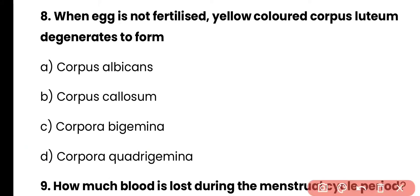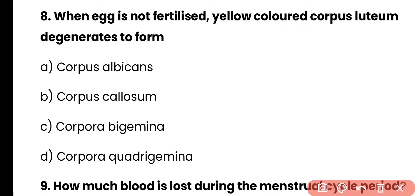Question 8: When the egg is not fertilized, the yellow-colored corpus luteum degenerates to form — corpus albicans, corpus callosum, corpora bigamina, or corpora quadrigemina? Correct answer is option A. When there is no fertilization, the corpus luteum is further broken down into corpus albicans.